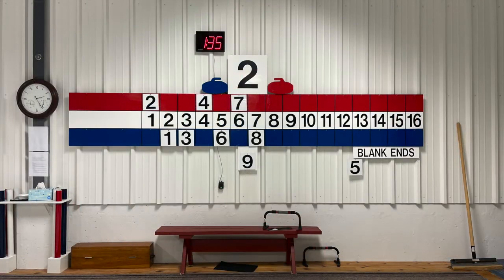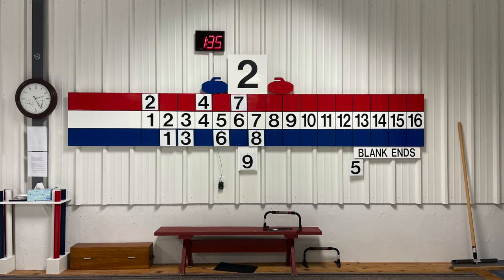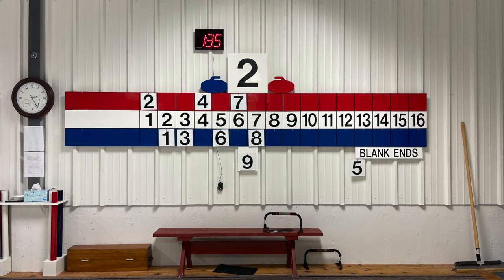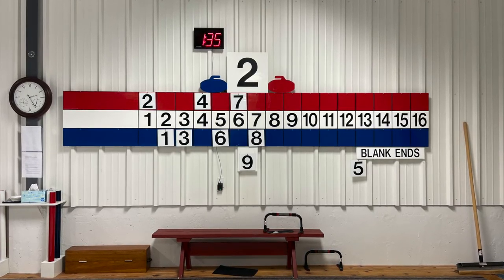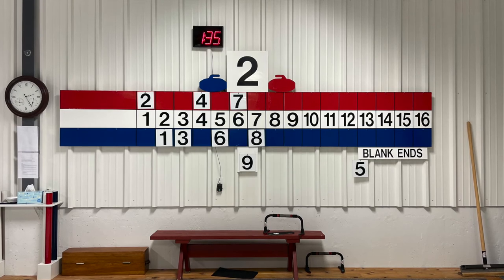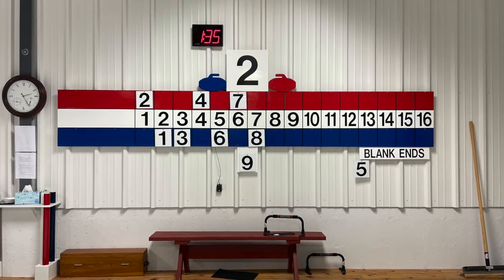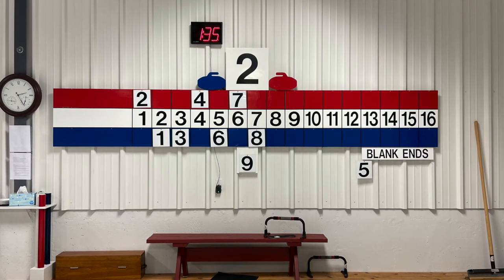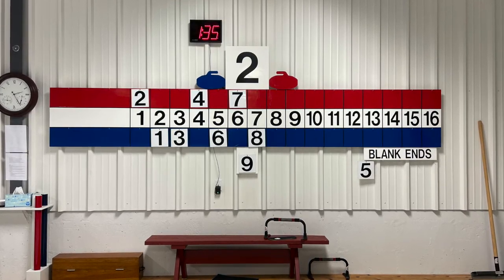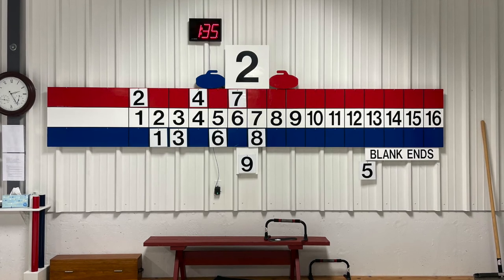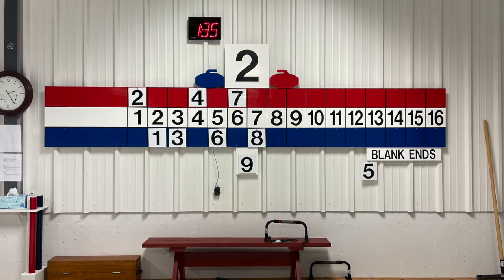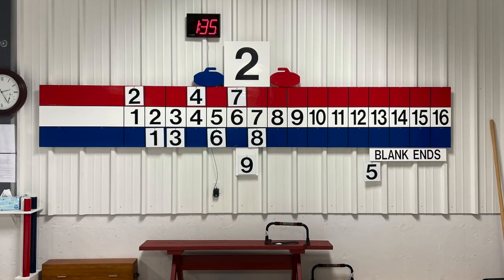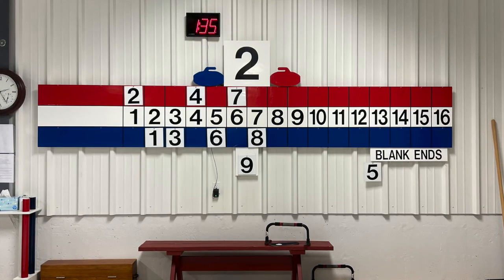This is an example of what a scoreboard would look like at the end of a game. In the first end, blue scored two. In the second, red scored one. In the third, blue scored one. In the fourth, red scored three, making their total four. In the fifth, the teams blanked an end. In the sixth, blue scored two. In the seventh, red scored two, making their total six. And in the eighth, blue scored two, making their total seven, and winning the game.